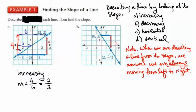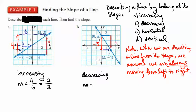The next example is one where the graph is actually falling from left to right, so we'll say it is decreasing. How do we measure? We always start with the vertical component first — 1, 2, 3 — so we went down by 3, giving us negative 3. Then we go over by 2. So the slope is down 3 over 2, which is negative 3 over 2.